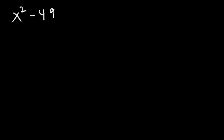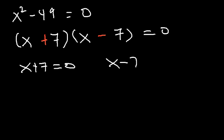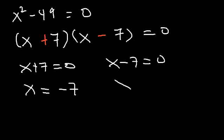For practice, let's work on a few more examples like that. Solve the equation x squared minus 49 is equal to 0. The square root of x squared is x, the square root of 49 is 7, and one is going to be positive, the other will be negative. Setting each one equal to 0, we can see that x is equal to negative 7, and x is equal to positive 7.